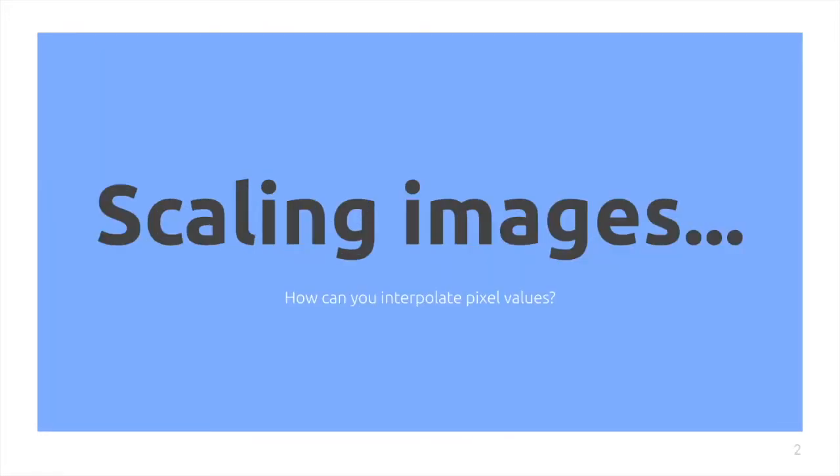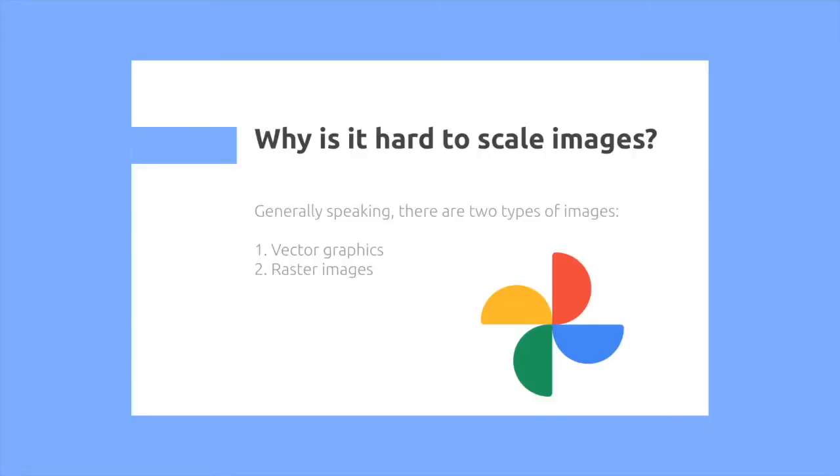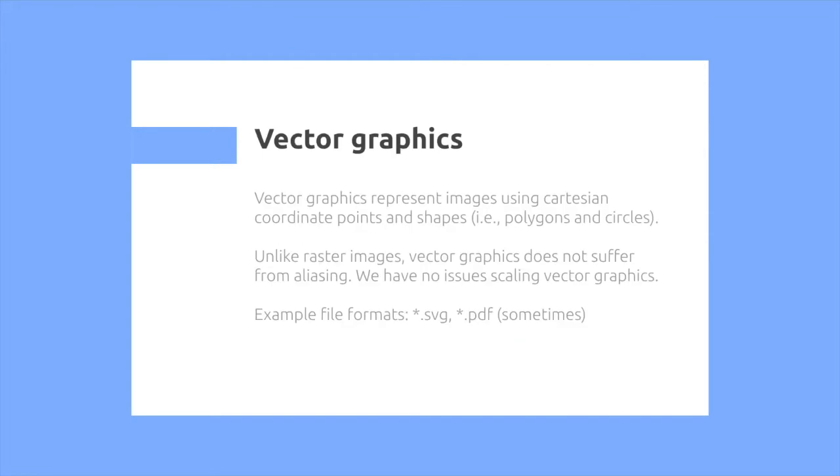Image scaling. How do you interpolate pixel values in order to scale images? So why is it hard to scale images? Let's start off by discussing the two types of general images,